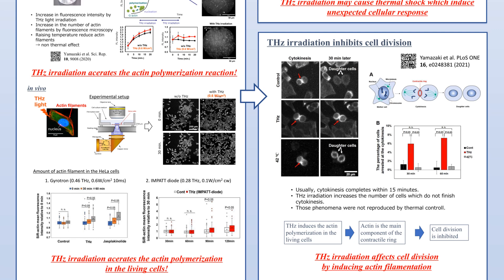Actin plays an important role in living cells, and we found that terahertz irradiation changes cell function by affecting actin proteins. This is a fluorescence image of HeLa cells during cell division. Usually cell division ends in about 15 minutes, but with terahertz irradiation, many cells stop cytokinesis as shown in this picture. At the end of cytokinesis, the actomyosin contractile ring is formed and shrinks to divide the cell plasma. Most probably, terahertz irradiation disturbs the disassembling of the contractile ring.